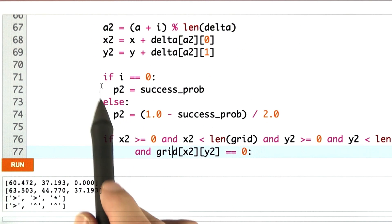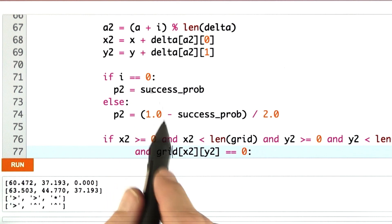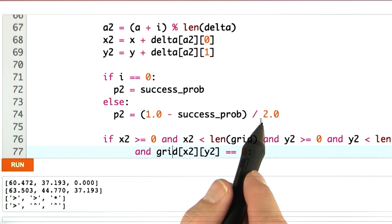And now I need to assign a probability to this outcome. Well, if the modifier is 0, we take the success probability. If it's not 0, we take 1 minus success probability divided by 2 because there's two possible undesired outcomes.